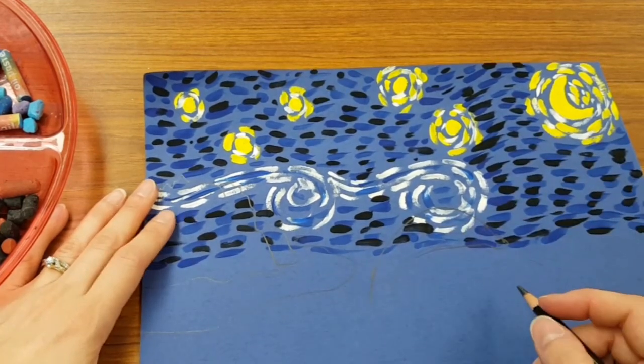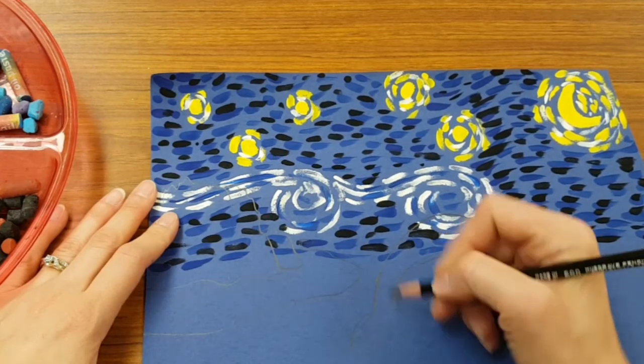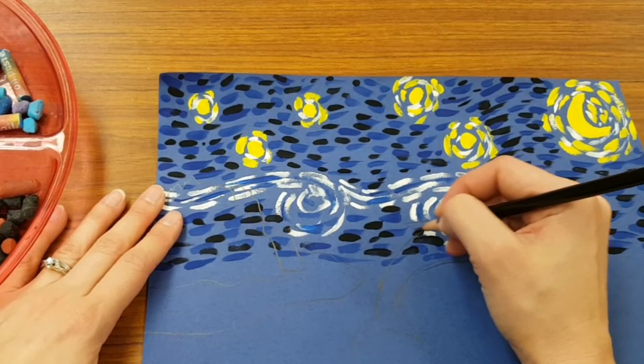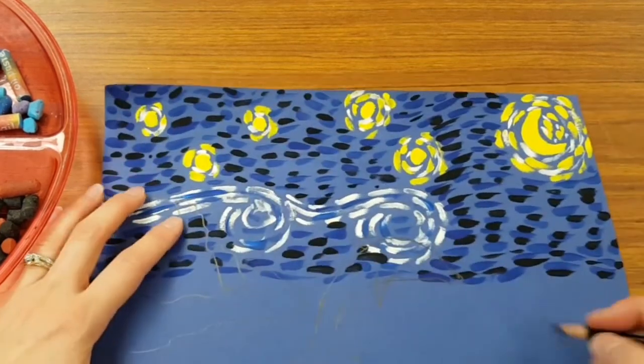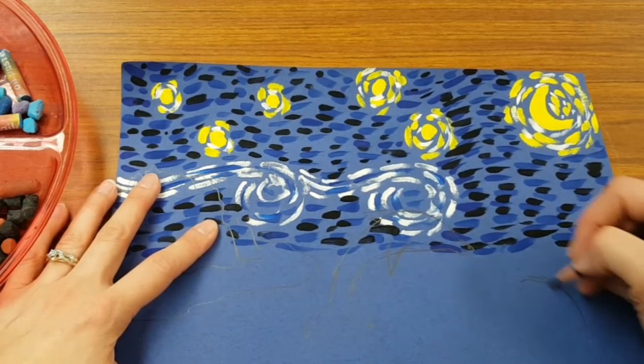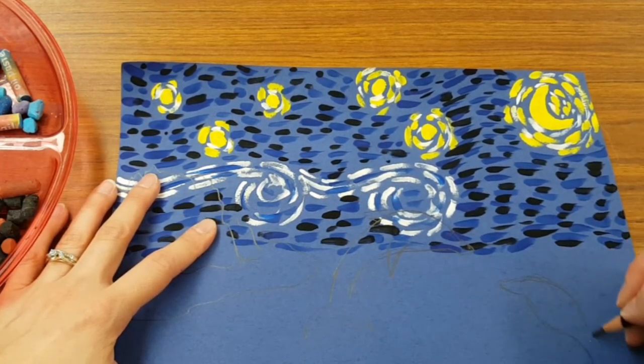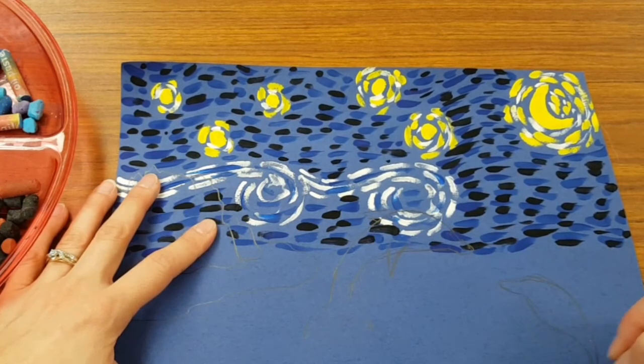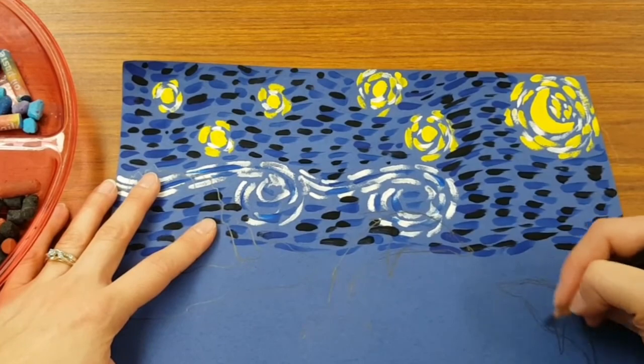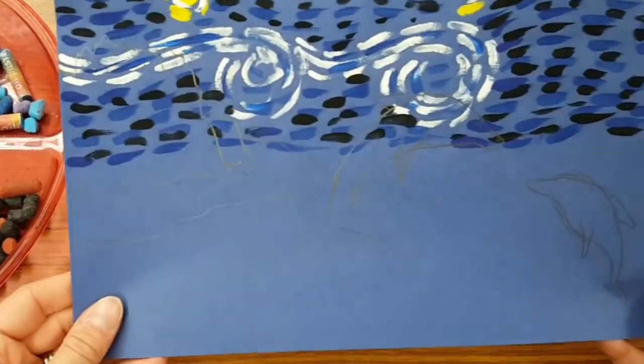And yes, I'm covering up part of my sky, because after we draw we're using oil pastel to color things in. So I've got one jumping out of the water. I'll give it a friend.